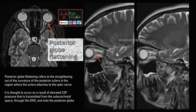Next: posterior globe flattening. Posterior globe flattening occurs at the sclera at the level of optic nerve insertion. It is thought to occur as a result of elevated CSF pressure transmitted from the subarachnoid space through the optic nerve sheath into the posterior globe. Here you can see the posterior globe flattening in this case.